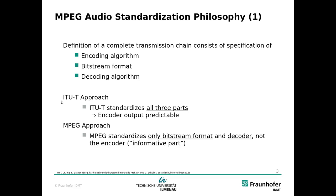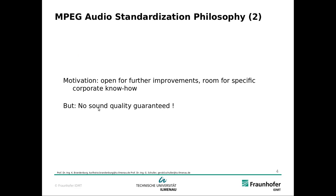The ITU, the International Telecommunications Union, takes the approach to standardize everything — all three parts — because it deals with telecommunications where two people communicate with each other, and there it makes sense to standardize both sides. MPEG is more concerned about videos for download and broadcasts, so it is more like a central station communicating to many. Hence MPEG standardizes only the bit stream format and the decoder, not the encoder which would be in the studio. This is only an informative example in the standard. The motivation is to be open for further improvements and to leave room for specific corporate know-how, but that also means there is no sound quality guaranteed because that depends on the encoder.